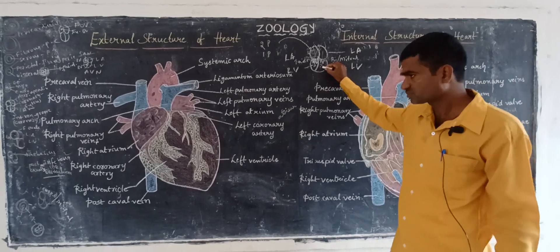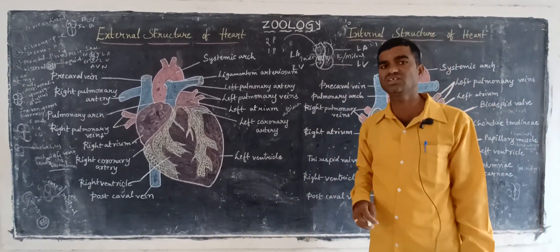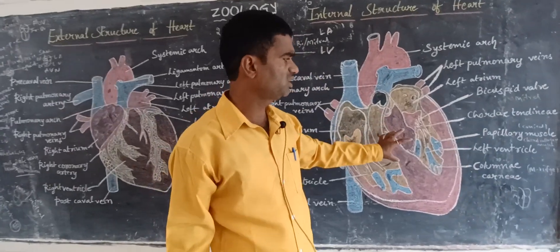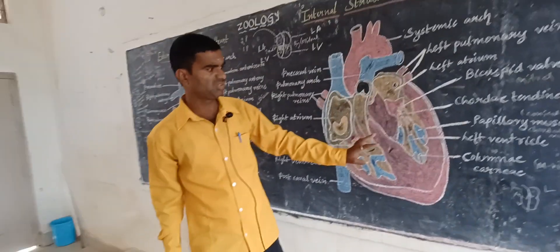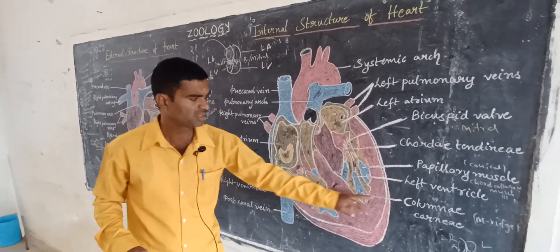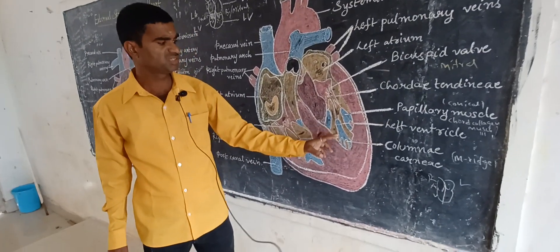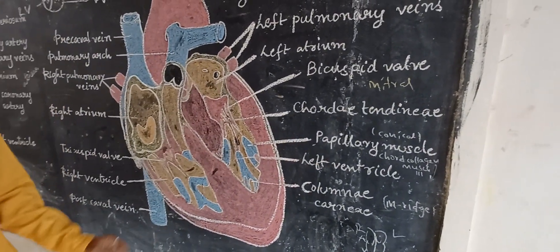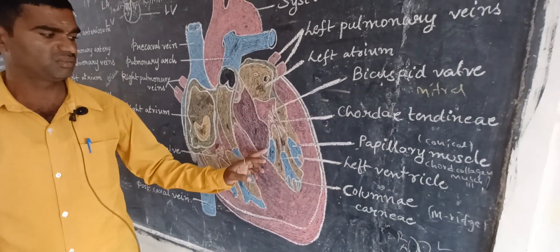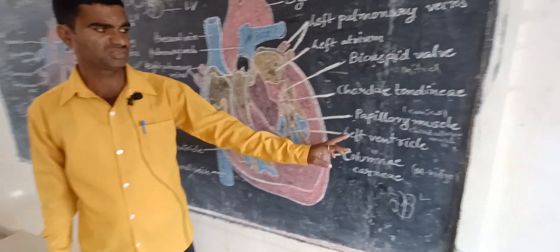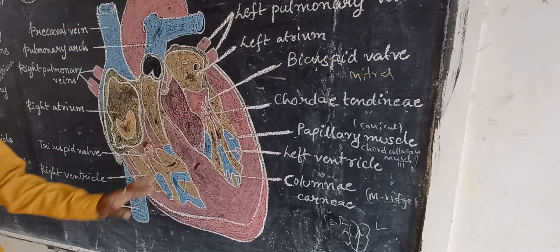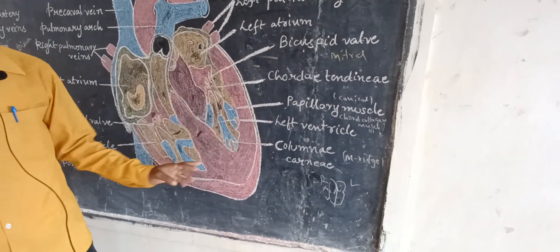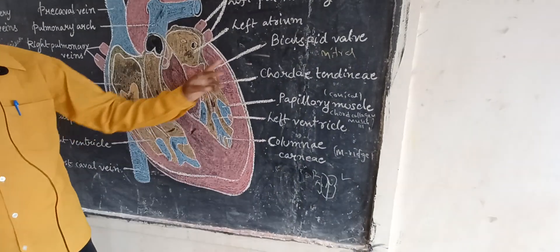In the ventricles, it is somewhat thicker and muscular ridge-like structures are formed. These muscular ridges are called columnae carneae. Conical-shaped structures, called papillary muscles, are also forming. Cord-like muscles are formed, called chordae tendineae. The bicuspid valve is also present here from the left atrium through the left ventricle.